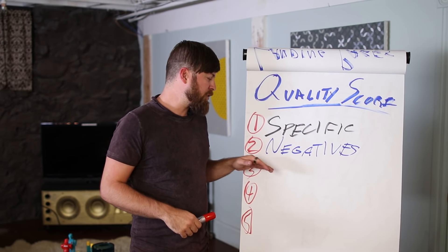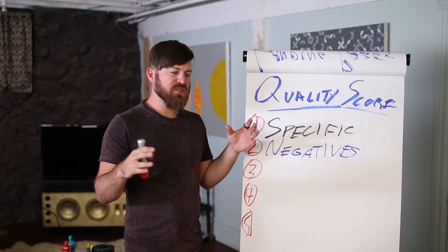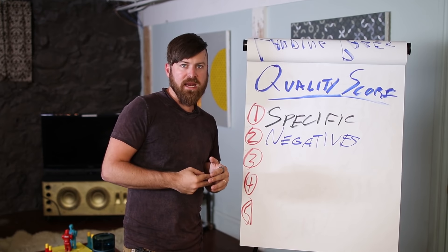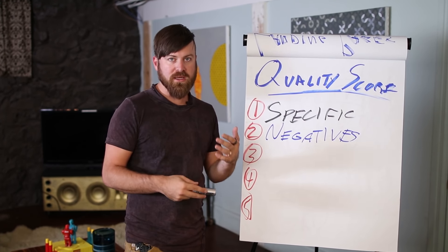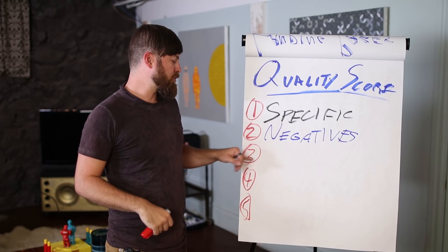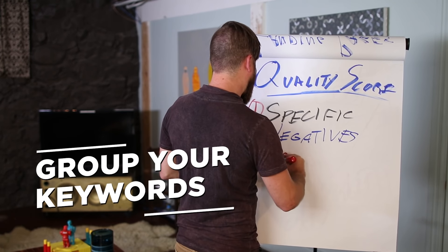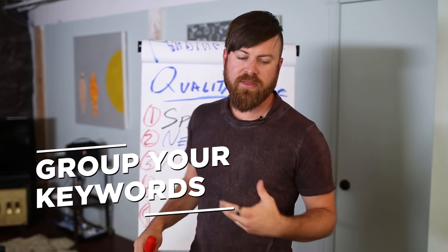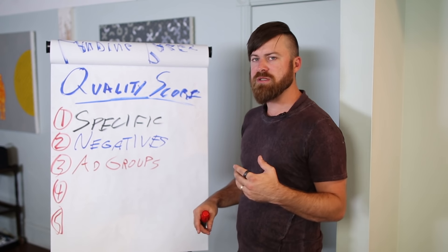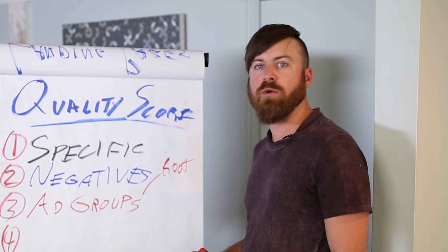Over the years, I got good at figuring out how to correctly structure ad campaigns. I saw a lot of businesses that would just take all their keywords—like auto mechanic or auto repair Thousand Oaks—and put them all in one big campaign, all in one ad group. But you can increase quality score dramatically if you separate your keywords into more specific ad groups.